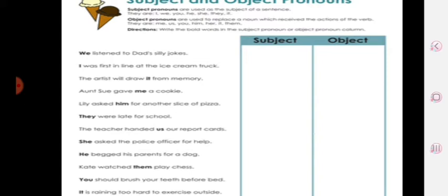So let's—I'll help you to do this exercise, then I'll send you a worksheet and you will do it yourself. First is 'we listened to daddy's silly jokes.' Here 'listened' is an action word, and before that we use a subject pronoun, so 'we' is a subject pronoun.